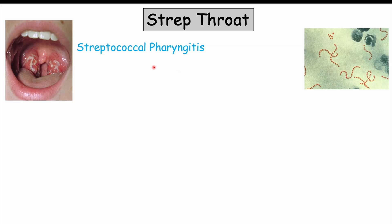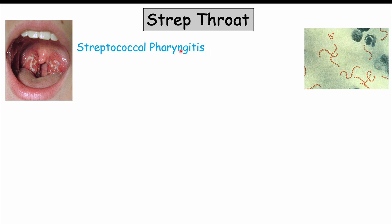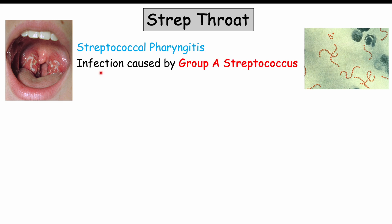Strep throat is also known as streptococcal pharyngitis — 'itis' referring to inflammation, and 'pharynge' referring to the pharynx or throat, so it's the inflammation of the throat. It's caused by an infection with Group A Streptococcus bacteria, which is a gram-positive bacteria, specifically Streptococcus pyogenes. Streptococcus pyogenes can cause multiple types of illnesses, but for this lesson we're going to focus on strep throat.